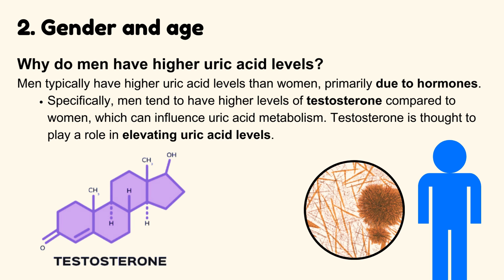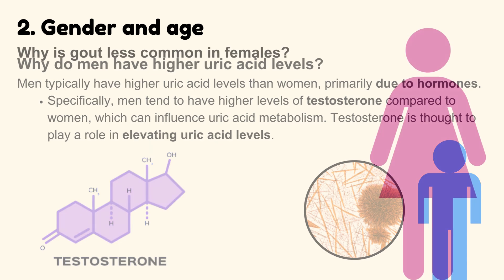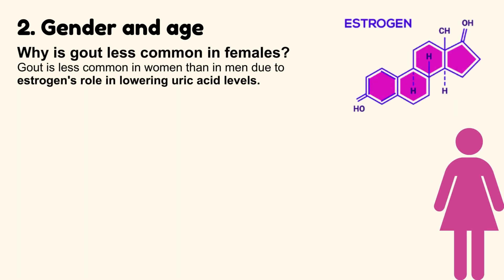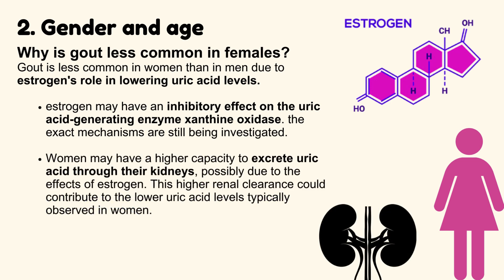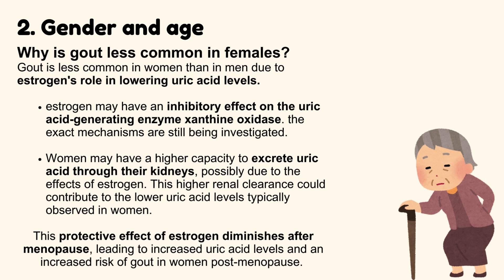Why do men have higher uric acid levels? Men typically have higher uric acid levels than women, primarily due to hormones. Specifically, men tend to have higher levels of testosterone, which can influence uric acid metabolism. Gout is less common in women due to estrogen's role in lowering uric acid levels. Estrogen may inhibit the uric acid-generating enzyme xanthine oxidase, and women may have a higher capacity to excrete uric acid through their kidneys. This protective effect diminishes after menopause, leading to increased uric acid levels and a higher risk of gout in post-menopausal women.